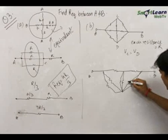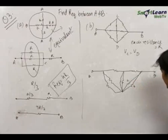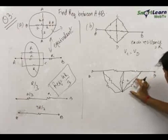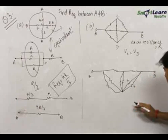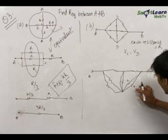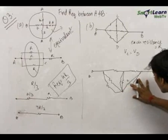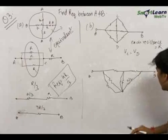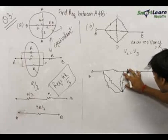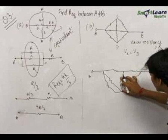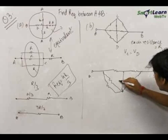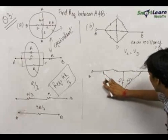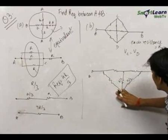Now this resistance is R, and these two are in parallel because they are across the same potential difference. Therefore we can replace them by R/2. So this becomes R/2. Again R and R in parallel becomes equal to R/2. I write this as R/2 and these two also as a single R/2.